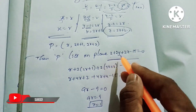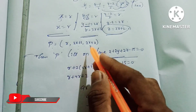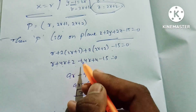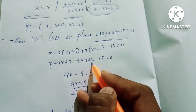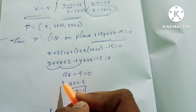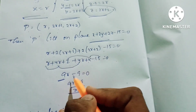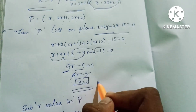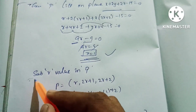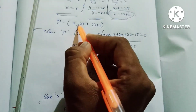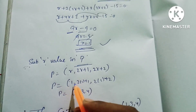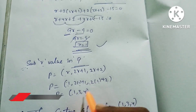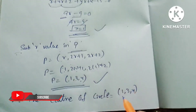Substituting into the plane equation x + 2y + 2z - 15 = 0: r + 2(2r + 1) + 2(2r + 2) - 15 = 0, giving r + 4r + 2 + 4r + 4 - 15 = 0, so 9r + 6 - 15 = 0, meaning 9r - 9 = 0, therefore r = 1. Substituting r = 1 back: x = 1, y = 2(1) + 1 = 3, z = 2(1) + 2 = 4. So the center of the circle is (1, 3, 4).